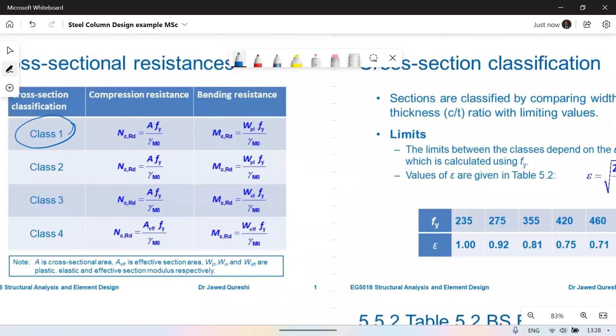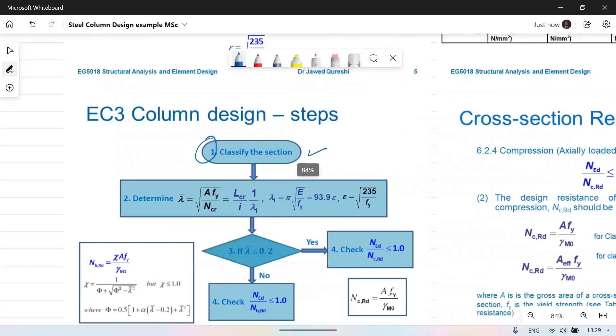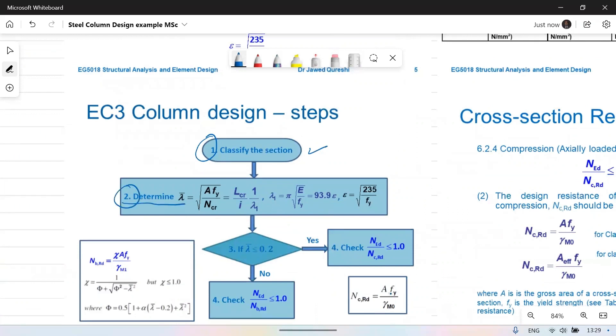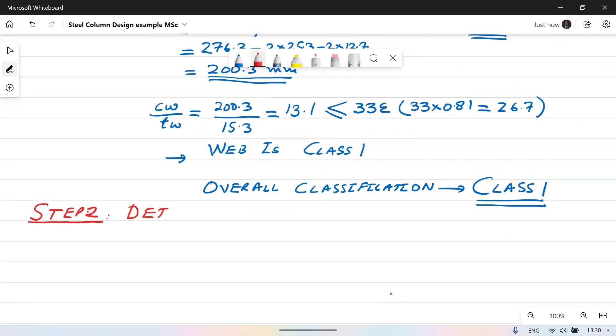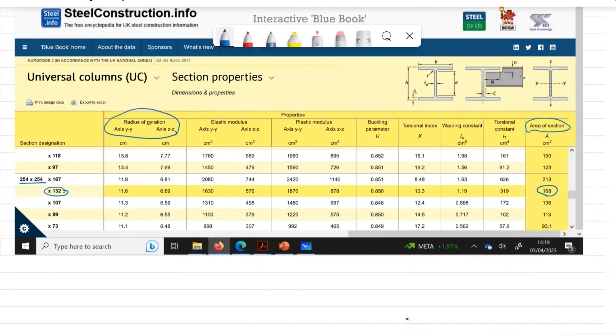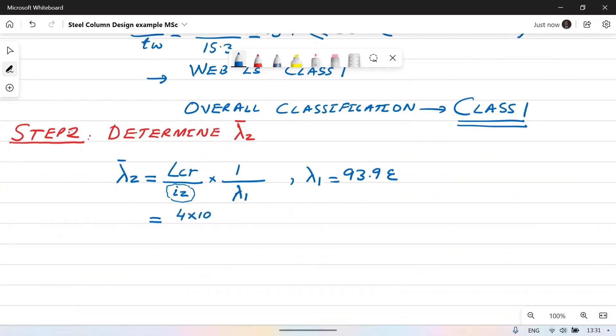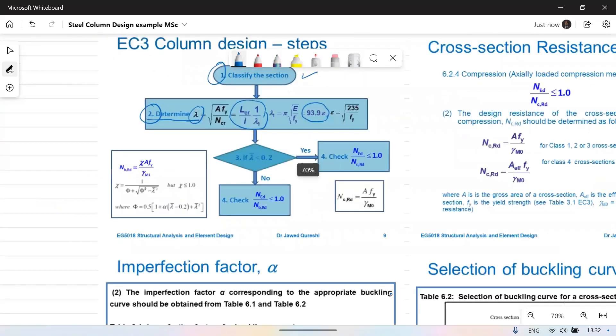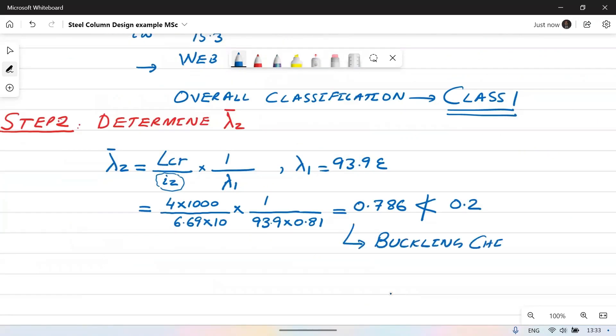Once the section is classified as class one then we will use appropriate formula for compression resistance. Step two is to determine if buckling check is required or not and we do this by finding out lambda dash. If it is less than or equal to 0.2 then no buckling resistance check is required. If it is more than 0.2 then buckling resistance check is required. Step two is to determine lambda dash Z. Lambda dash Z is equal to LCR over I_Z where I_Z is radius of gyration into 1 over lambda 1 where lambda 1 is equal to 93.9 epsilon. We get value of I_Z from section table as 6.69 in minor axis. When we input all these values then we get value of lambda dash Z as 0.786 which is not less than 0.2. This means that buckling check is required.